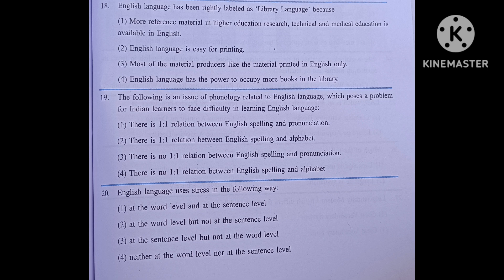English language uses stress in the following way: number one, at the word level and at the sentence level; number two, at the word level but not at the sentence level; number three, at the sentence level but not at the word level; number four, neither at the word level nor at the sentence level. The answer is at the word level and at the sentence level.